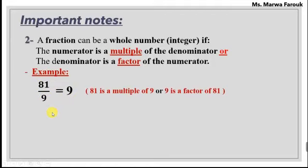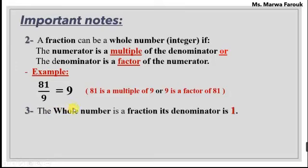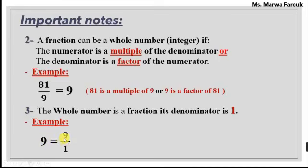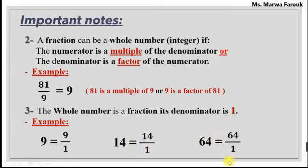Another important note: any whole number is a fraction whose denominator is 1. Here, 9 is a whole number — can I write it as a fraction? Yes, I can write it as a fraction by putting 1 as the denominator. So 14 is 14 over 1, and 64 is 64 over 1. Any integer can be written as a fraction when I put 1 in the denominator.